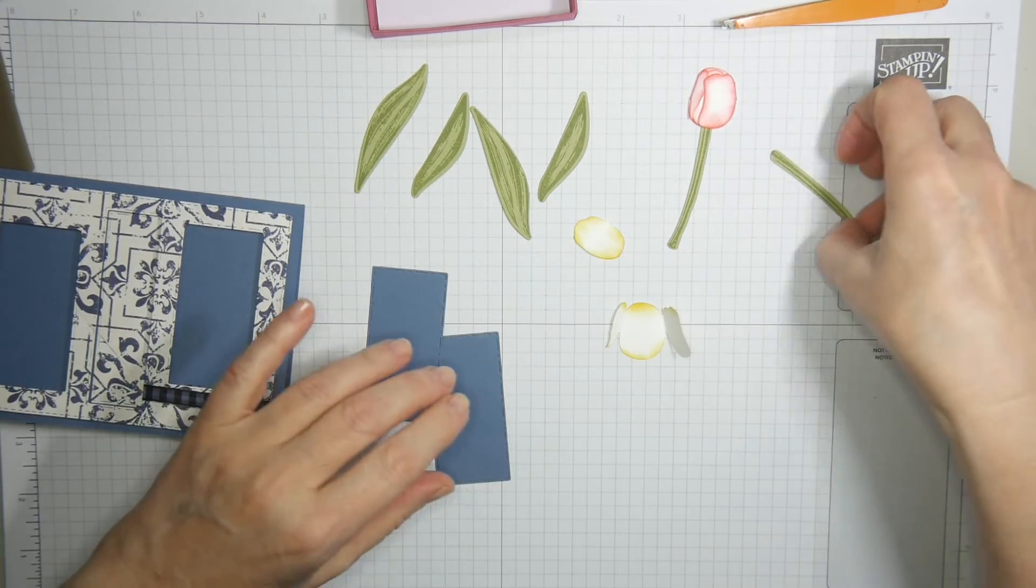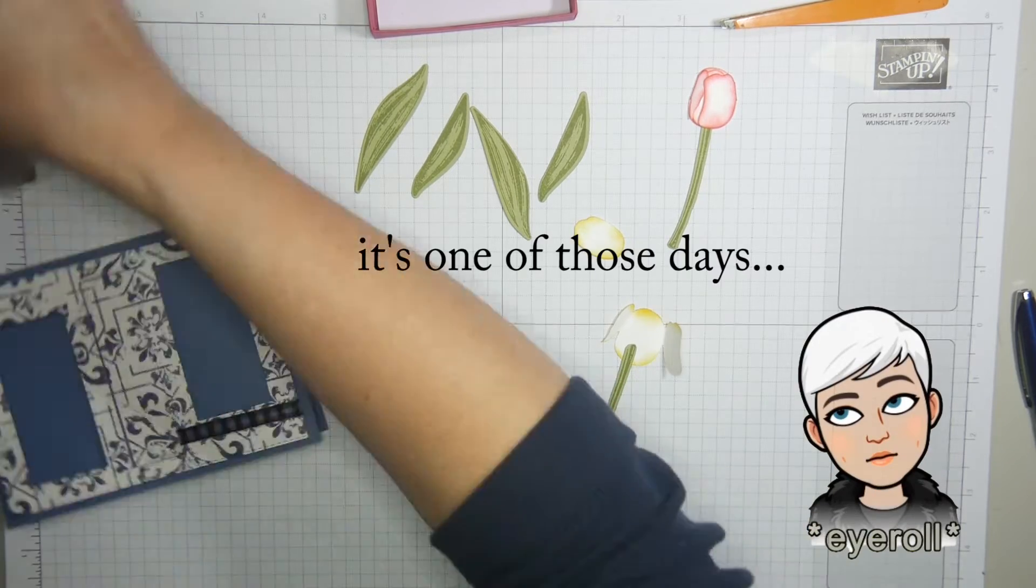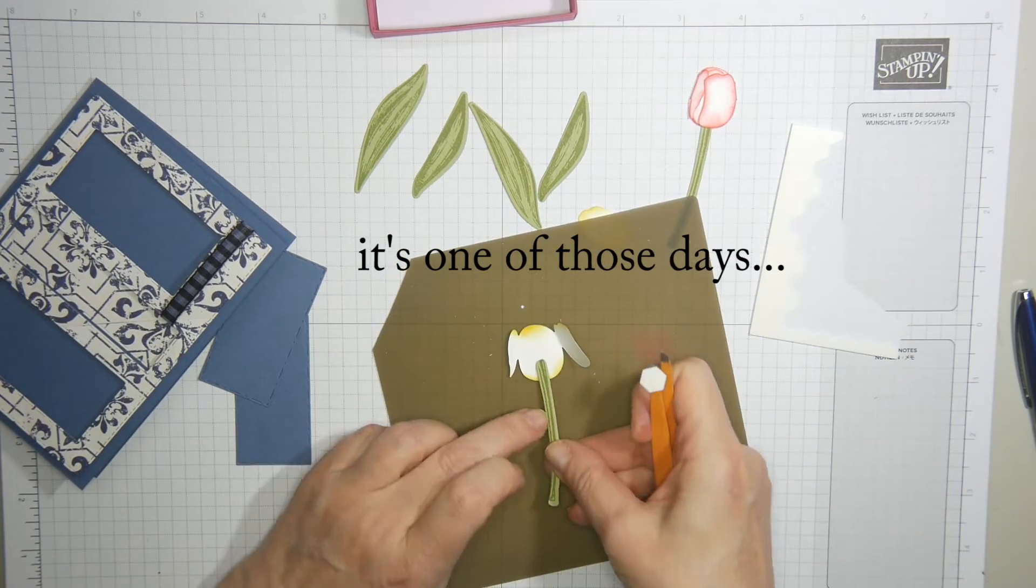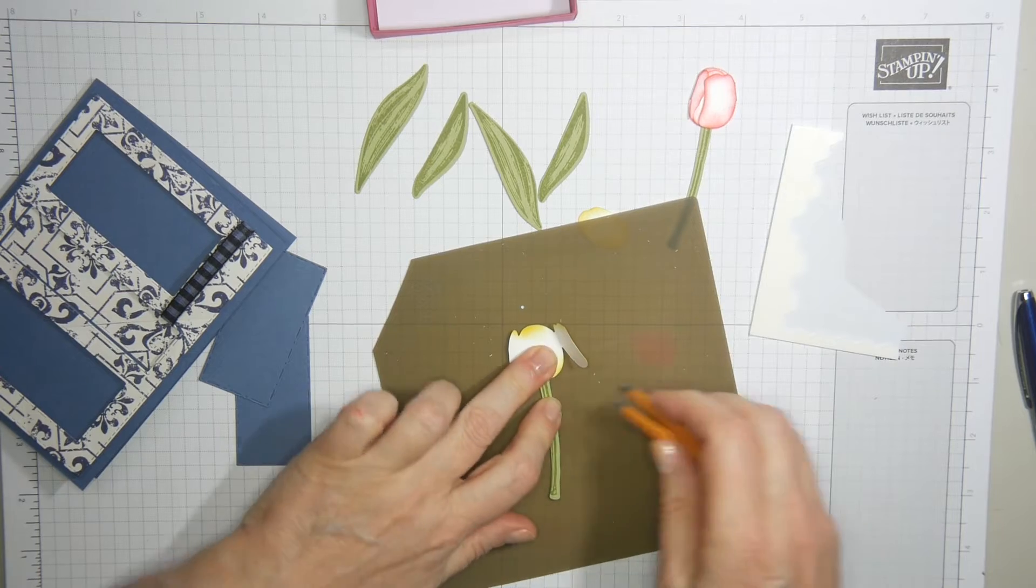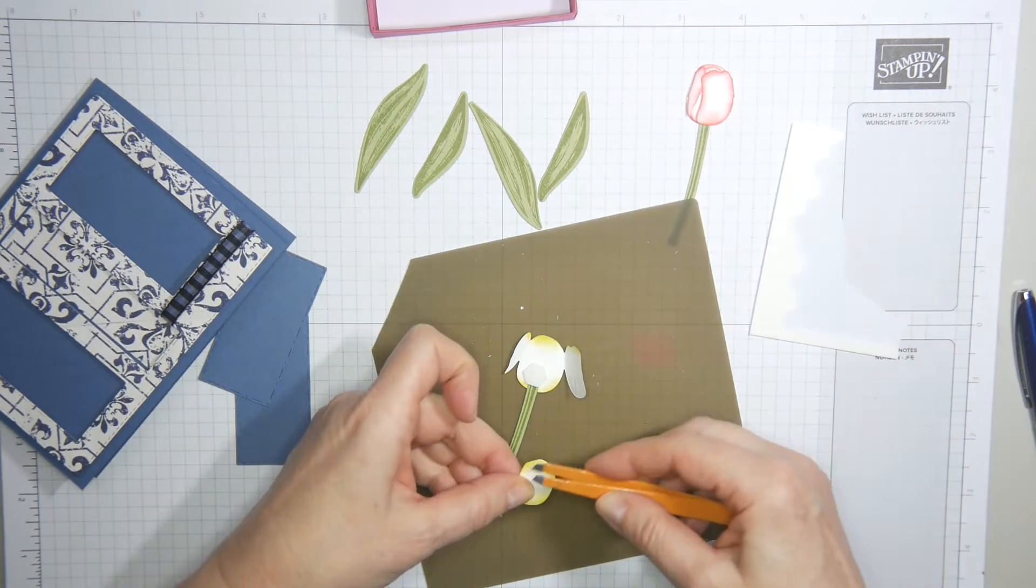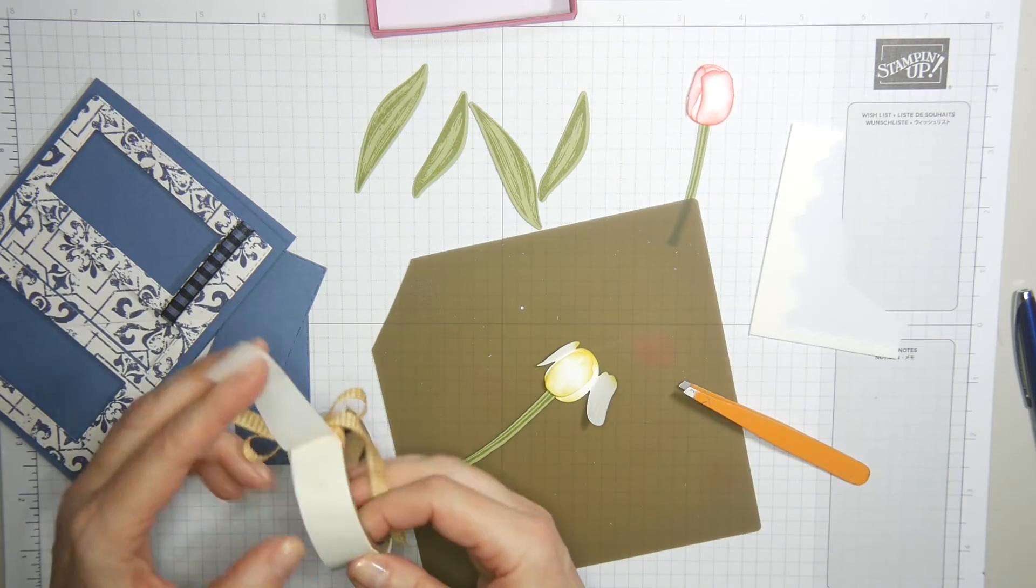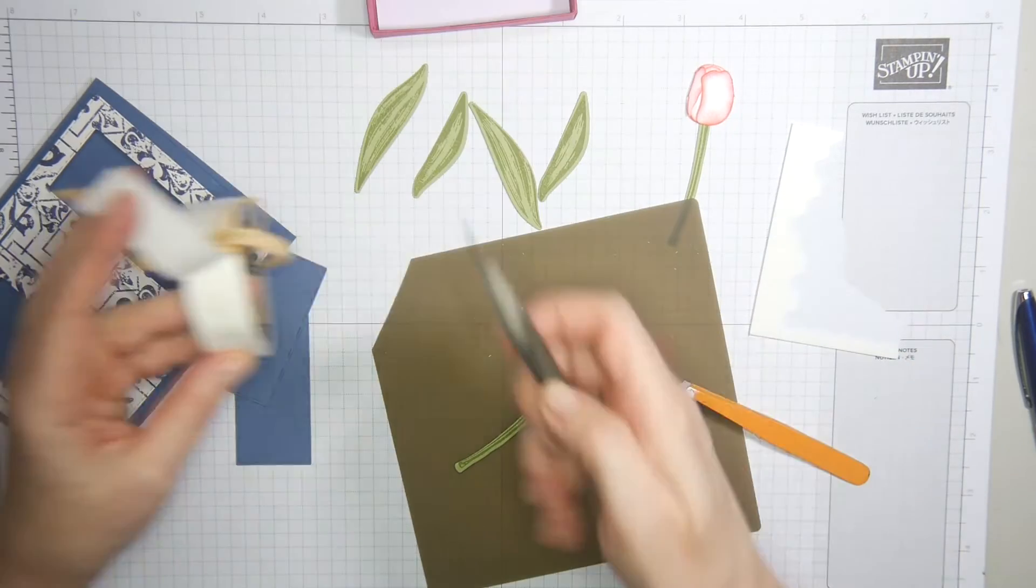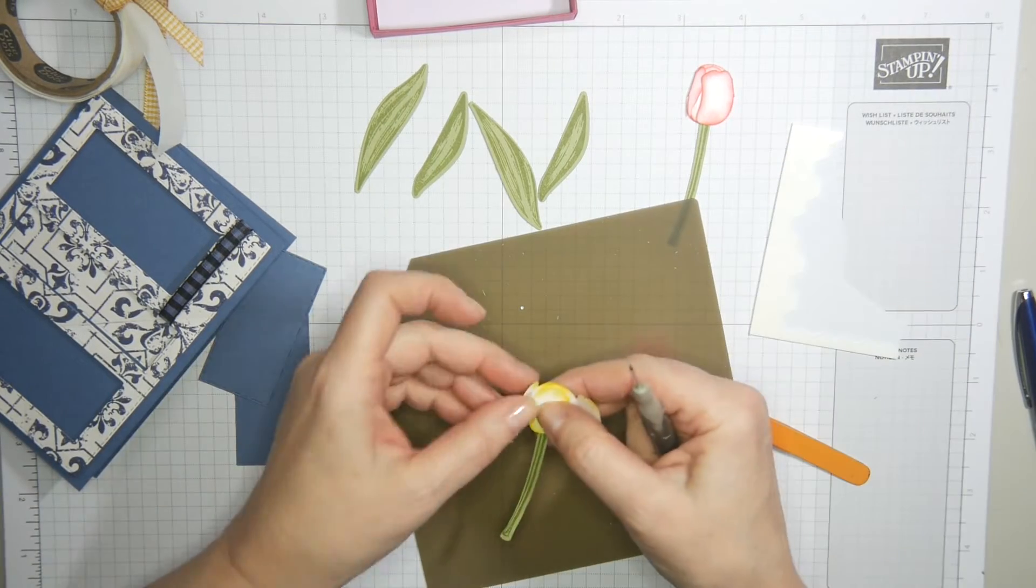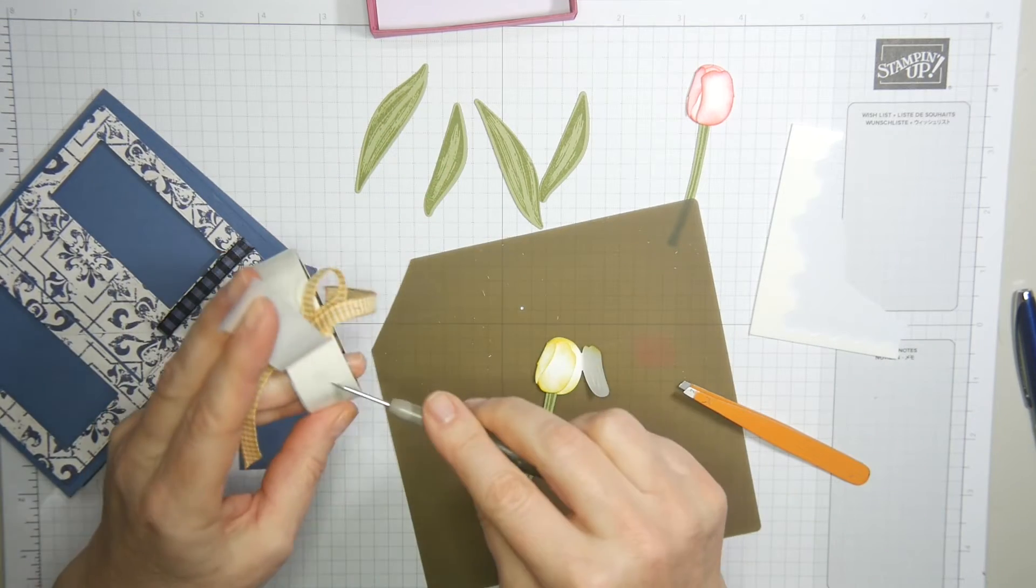All right, then I'm going to adhere first of all the stem using a Stampin' Dimensional. There we go, that's what I wanted. Then you can remove the backing paper, stick your leaf on. I'm using mini glue dots to stick the other halves on. This I fold it into a half bone shape, put it in, and I fold over the left leaf first and then the leaf on the right.